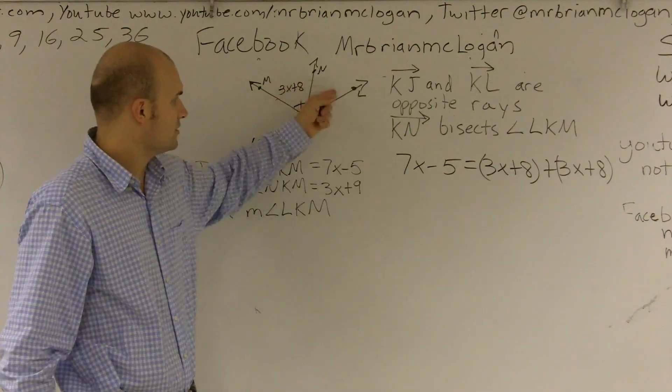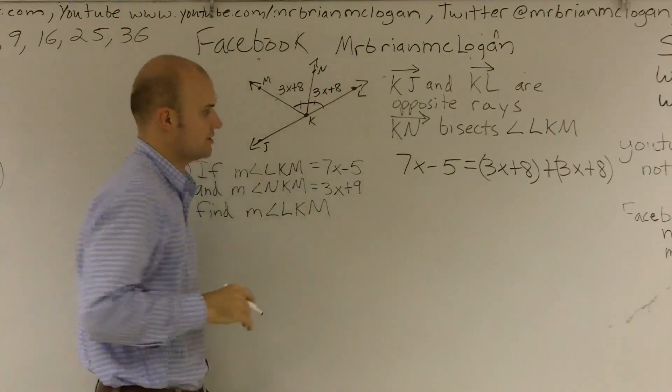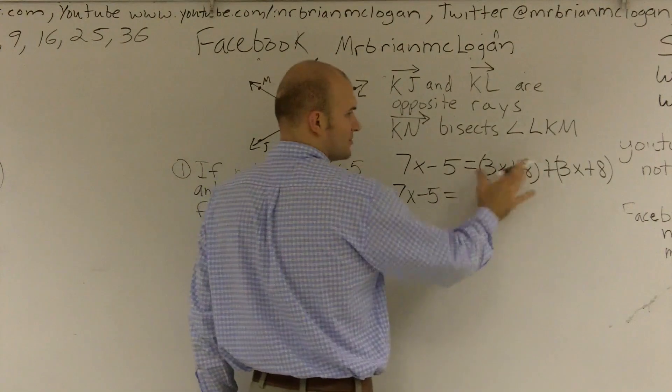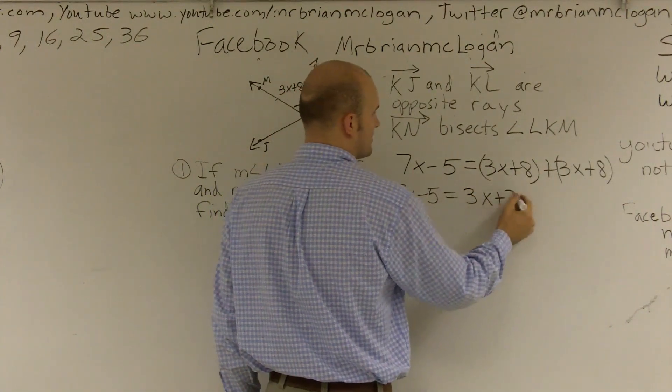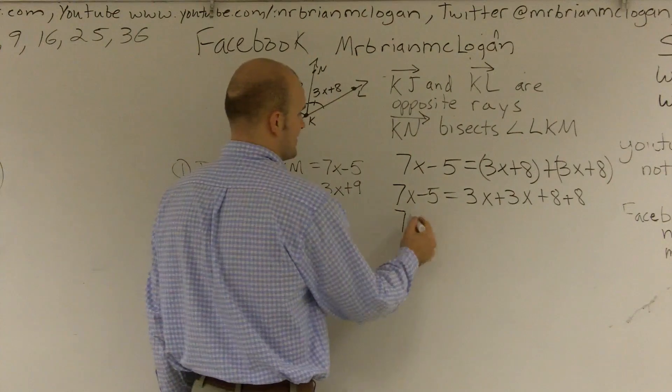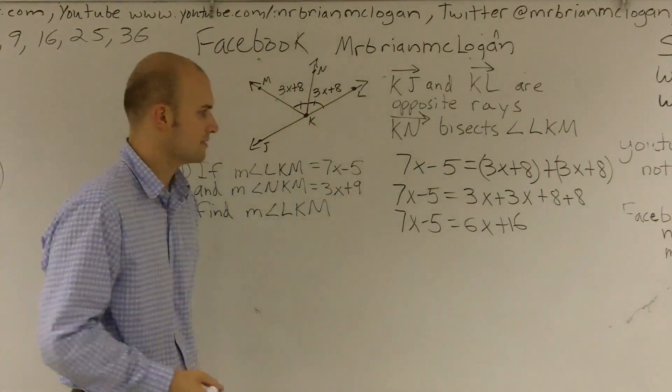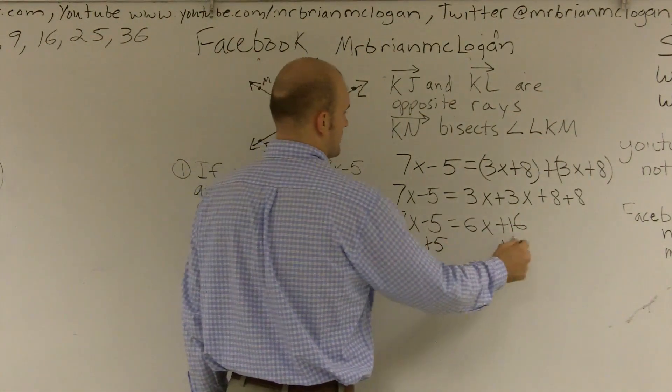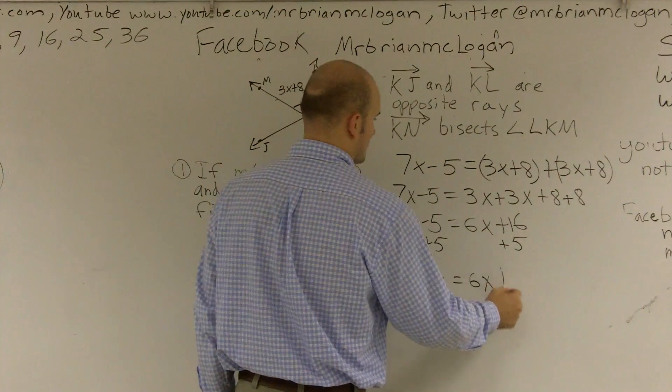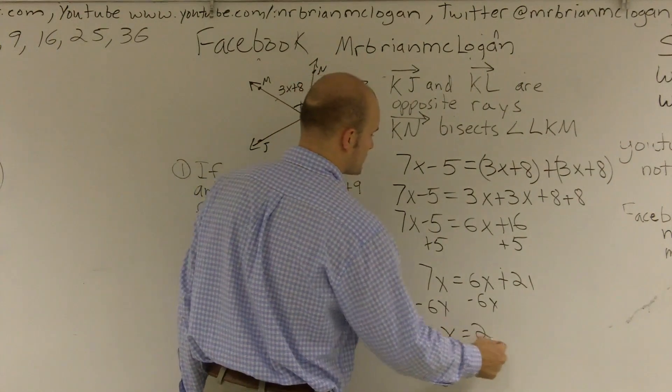So this whole angle equals this plus this, and since they are bisected, they're equal to each other. So now I can do some math. So this will become 7X minus 5 equals, well, I don't really need these parentheses anymore, do I? All right, I'm just going to now rearrange it so my variables and my constants are next to each other. So I have 7X minus 5 is equal to 6X plus 16. I will add a 5. Therefore, I get 7X is equal to 6X plus 21. Subtract 6X. X now equals 21.